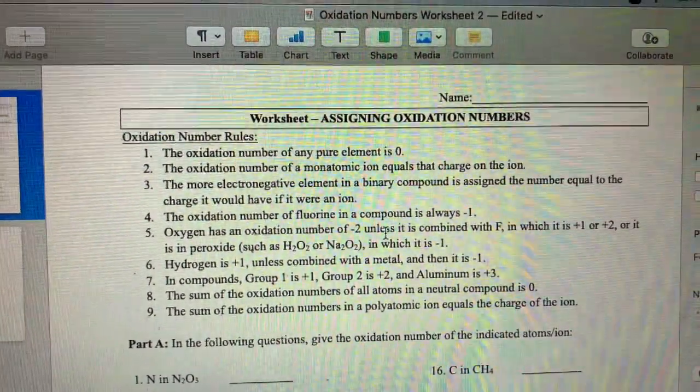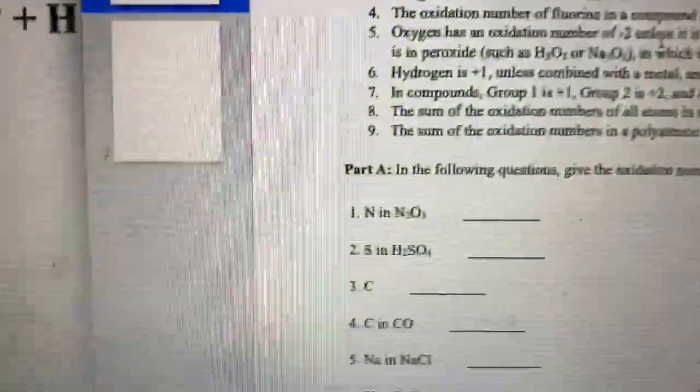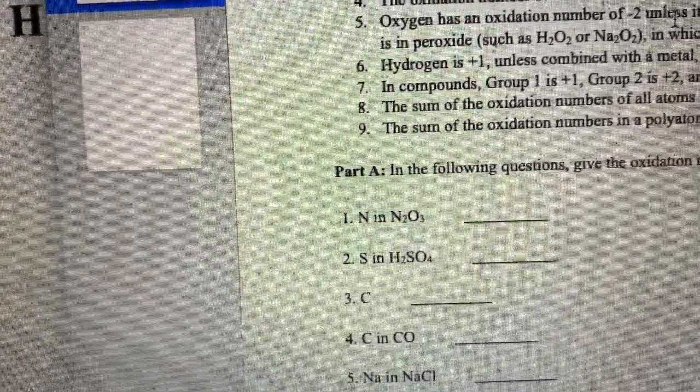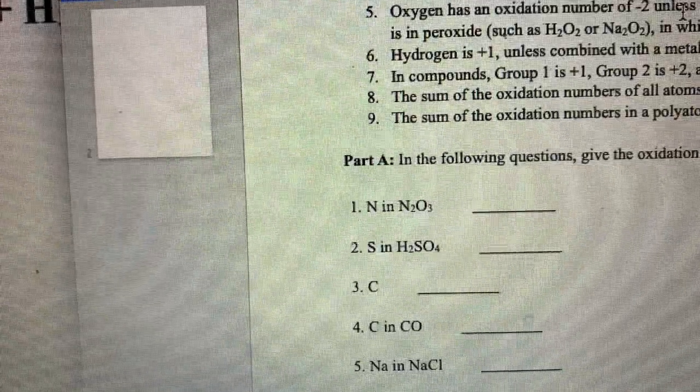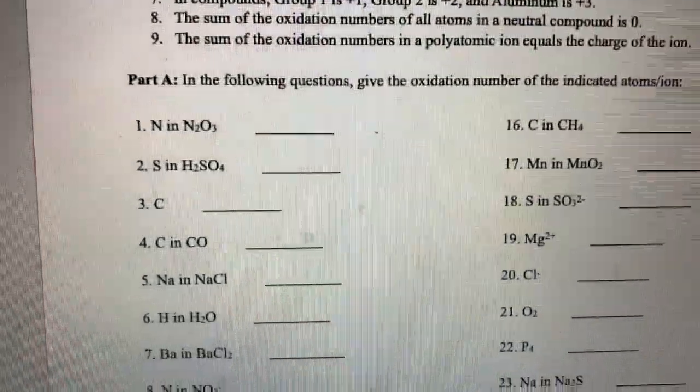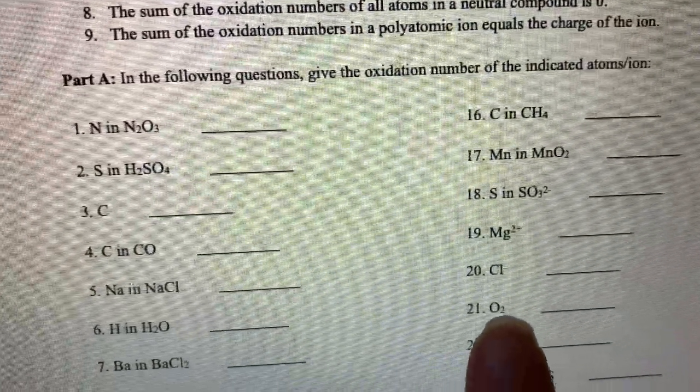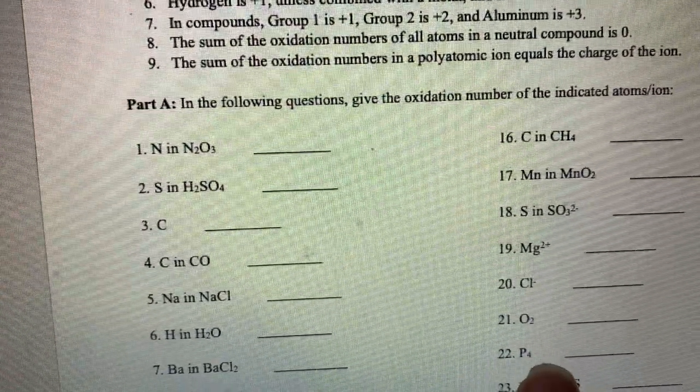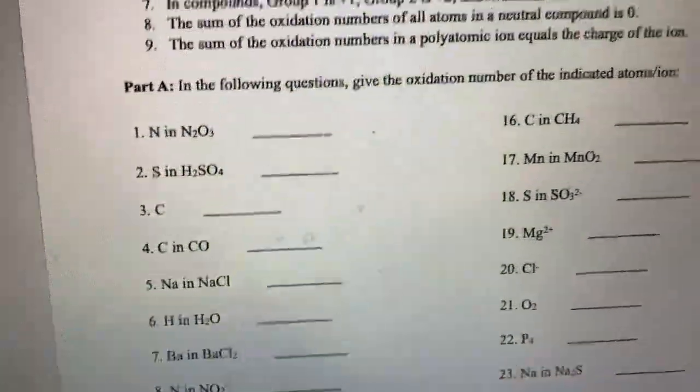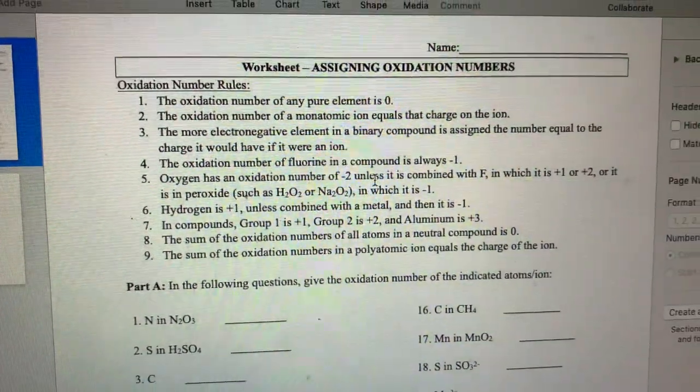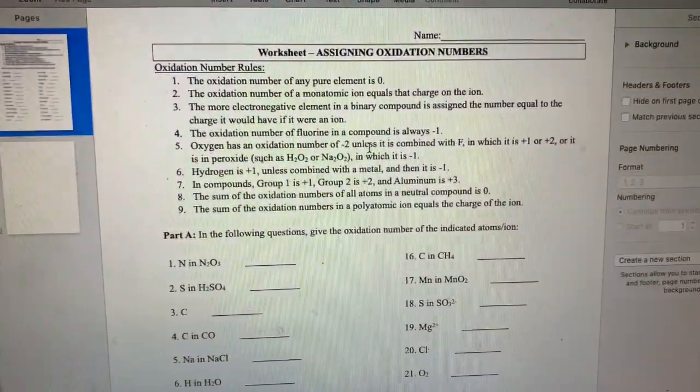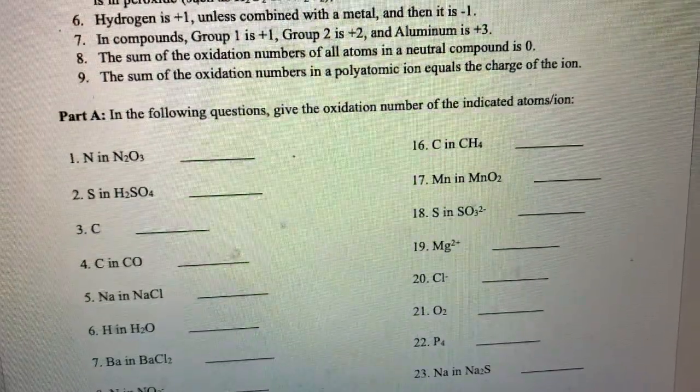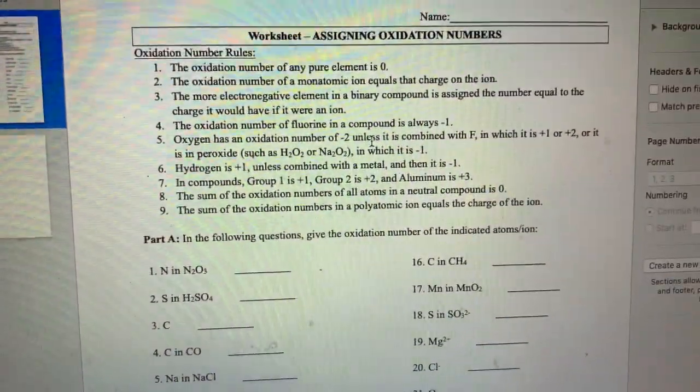The first rule is the oxidation number of a pure element is zero. That just means a pure element. If I'm looking at number three, that's carbon all by itself, just sitting there by itself. It's going to have an oxidation number of zero. Also if you have O₂ down here, O₂ is considered all by itself because it is a diatomic molecule. It's going to have an oxidation number of zero. Same thing for P₄. Rule number two: the oxidation number of a monatomic ion is equal to the charge on that ion. So here Mg²⁺, what's the oxidation number? It's two plus. Don't overthink that.